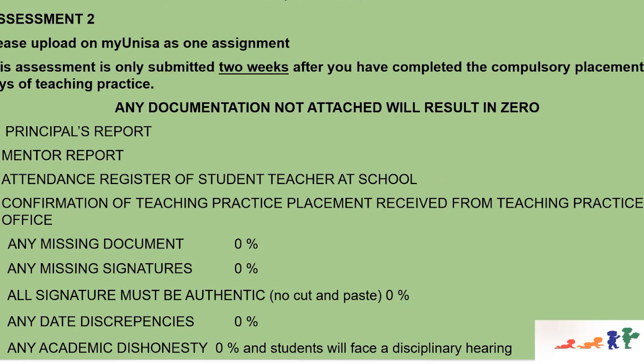Please watch the video link, which also includes a part on uploading. When you upload on MyUNISA, be aware that the rules and instructions are there on how you upload. Any documentation not added will result in zero. What is expected includes the mentor report, attendance register of student-teacher at school, and confirmation of the placement document. Please ensure everything is complete to avoid a zero. Any kind of discrepancies or academic dishonesty will lead to zero percent and students will face a disciplinary hearing. No academic dishonesty will be tolerated.